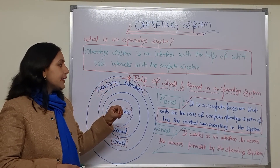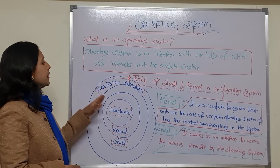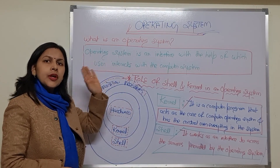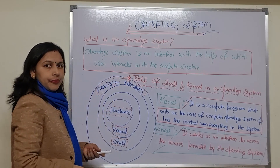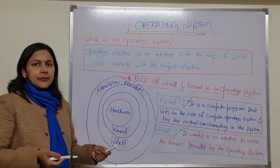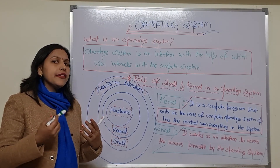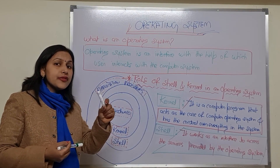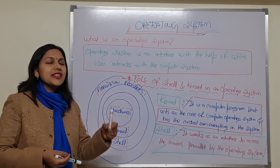Before moving into the topic of kernel and shell, you must know what an operating system is. An operating system is an interface with the help of which the user interacts with the computer system. For example, if you have computer hardware but want to work on it, you must have a main system software.